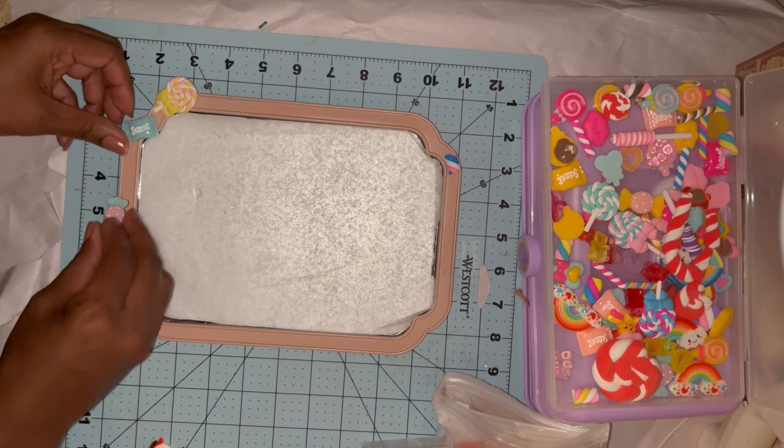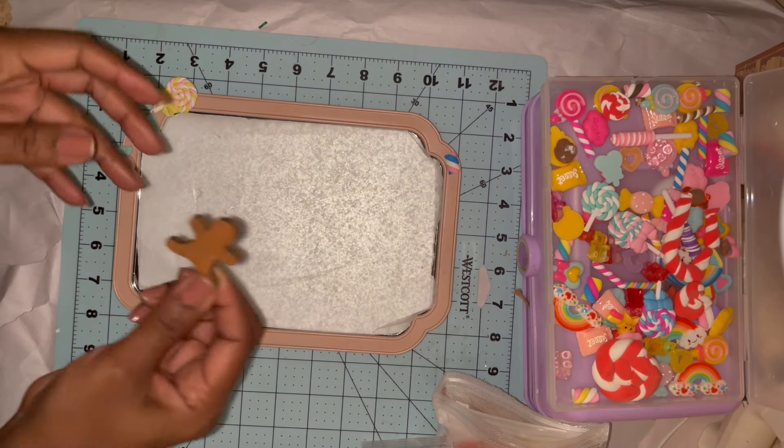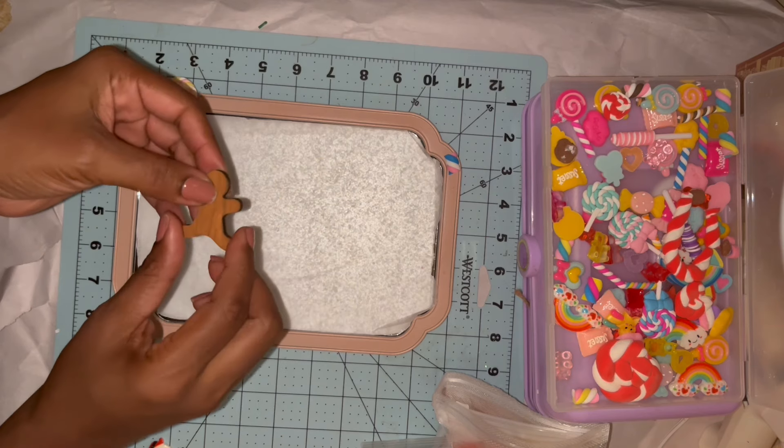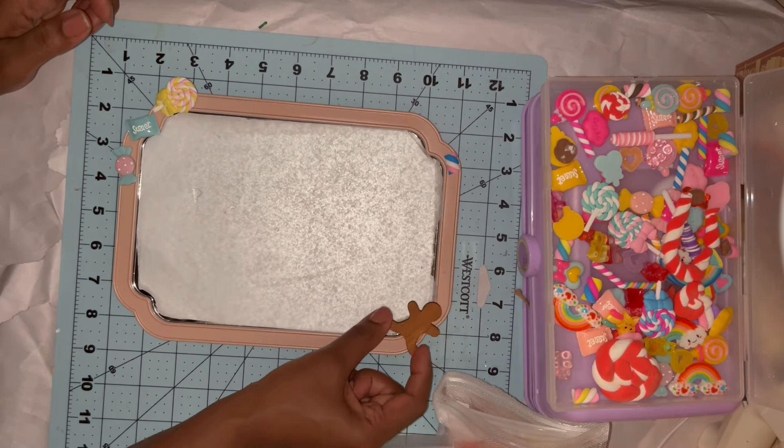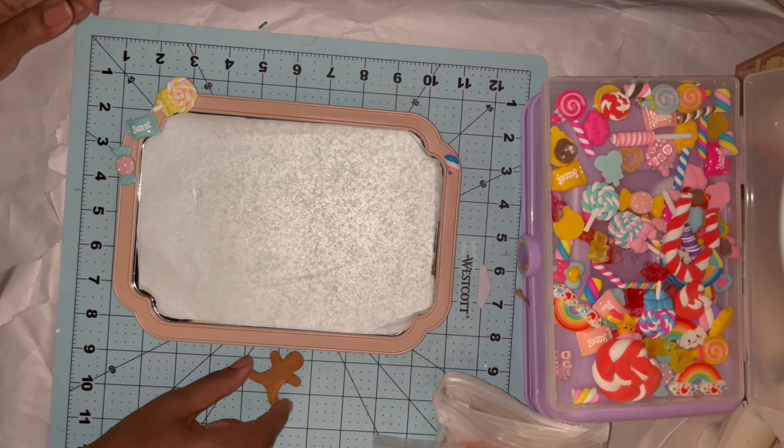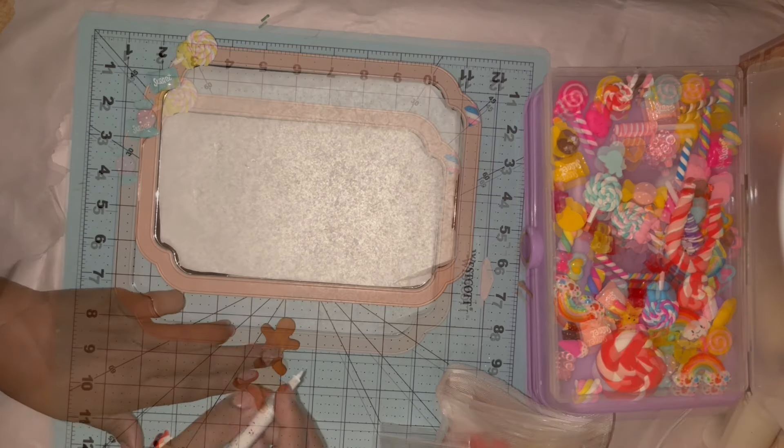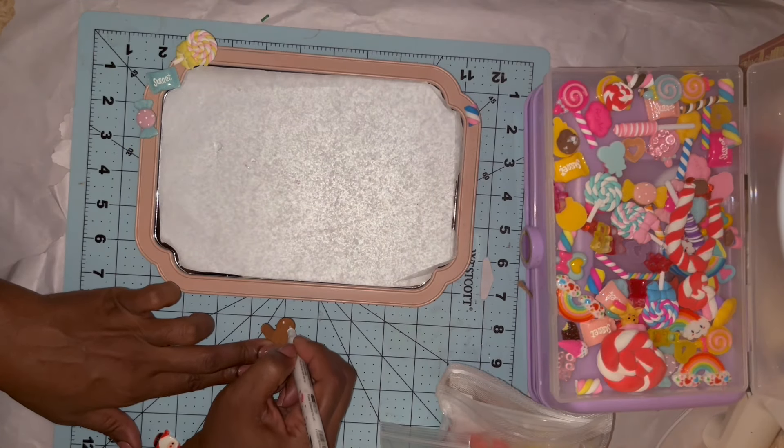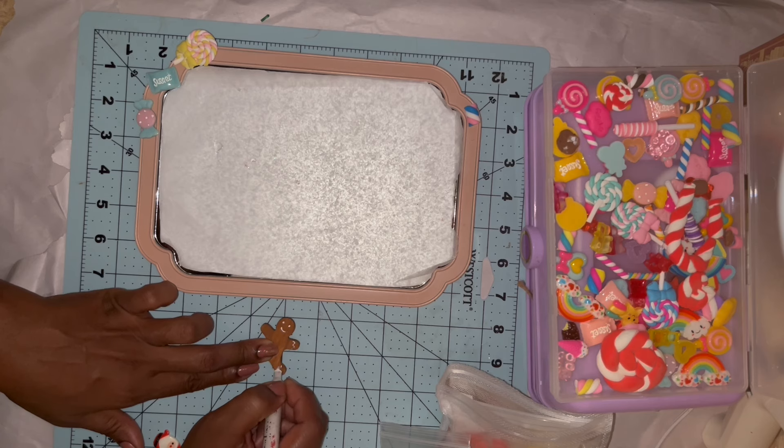And then I found one of the wooden Dollar Tree gingerbread men that I had previously painted last year, and I figured I would add him in. I'm going to go ahead and give him a little face and add some faux icing and little gumdrop buttons to him with just a paint pen. And then I continue to just play around with little pieces, moving them around.